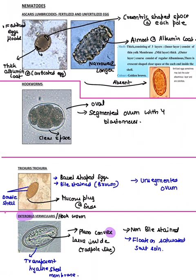For nematodes — Ascaris lumbricoides, also known as the roundworm, shows both fertilized and unfertilized eggs. The fertilized egg is smaller and has a thick albumin coat. It can be corticated (albumin coat present) or decorticated (no irregular albumin coat). The unfertilized egg has almost no albumin coat, is narrower and longer, and shows a crescent-shaped space at either pole.